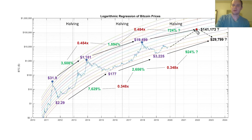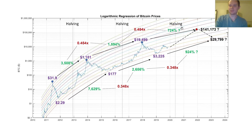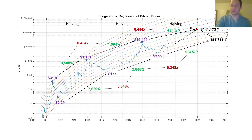I anticipate a lot of people are going to start taking profits if Bitcoin gets into six figures. So if we hit $100,000, there's going to be a lot of profit taking at that point. It doesn't mean it can't go higher, but continuing the same trend would put us at $141,000.